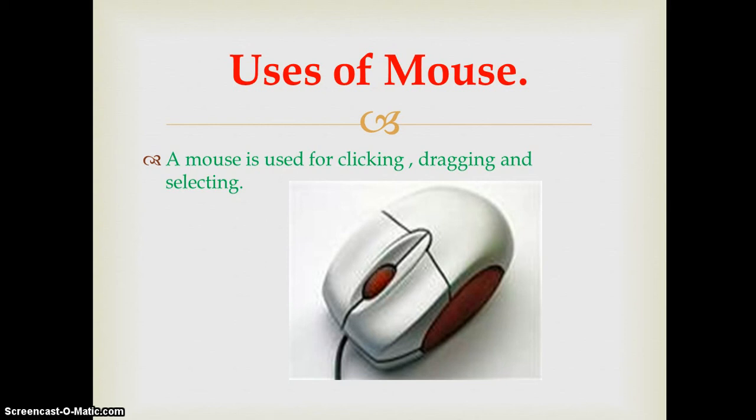Now, that is what a mouse looks like. If you look closely, you will see that the mouse has three buttons. The mouse has three buttons. One, two, and three.